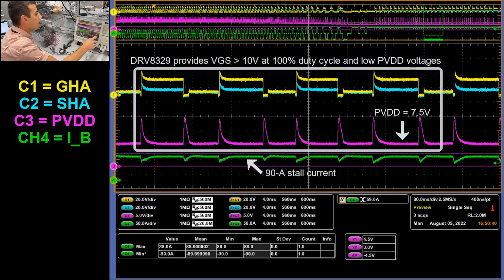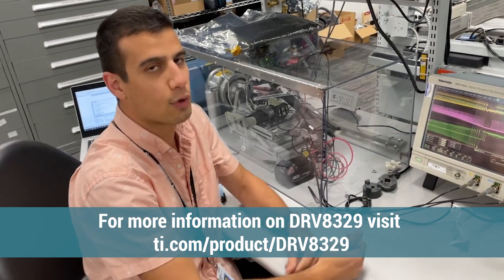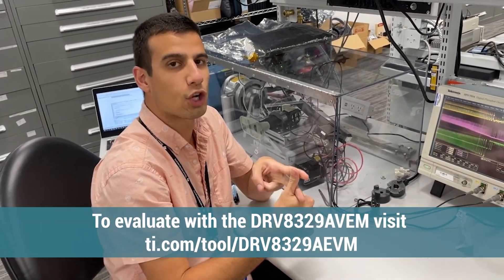So in summary, we can drive the DRV-8329 with 100% duty cycle throughout motor operating conditions and stall current conditions.